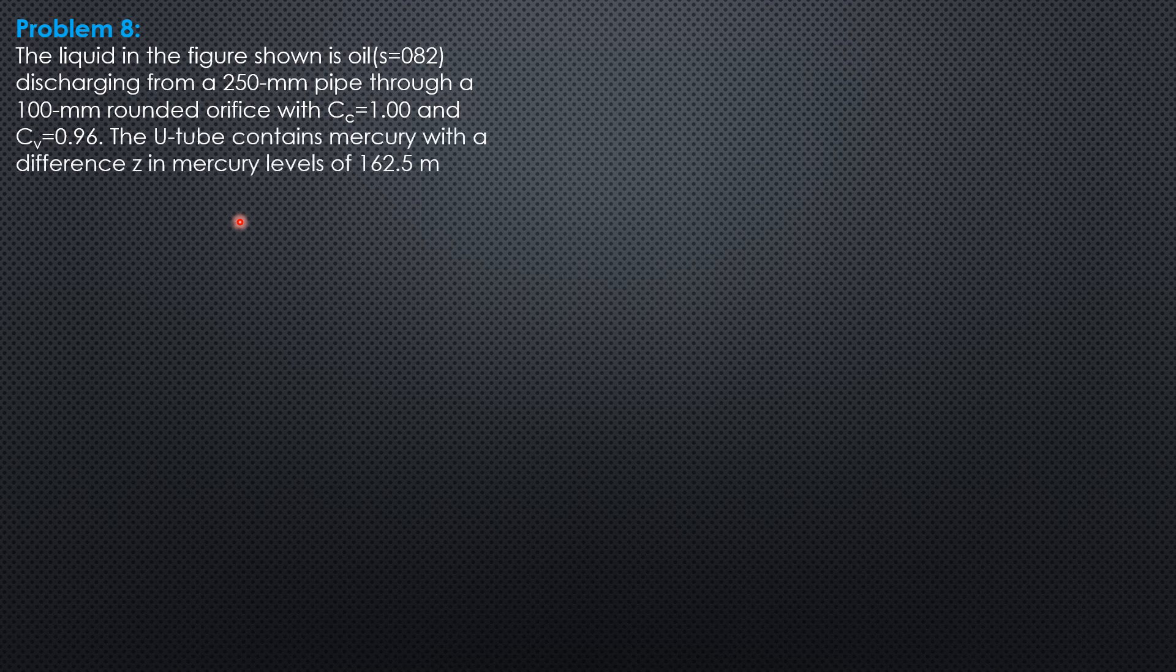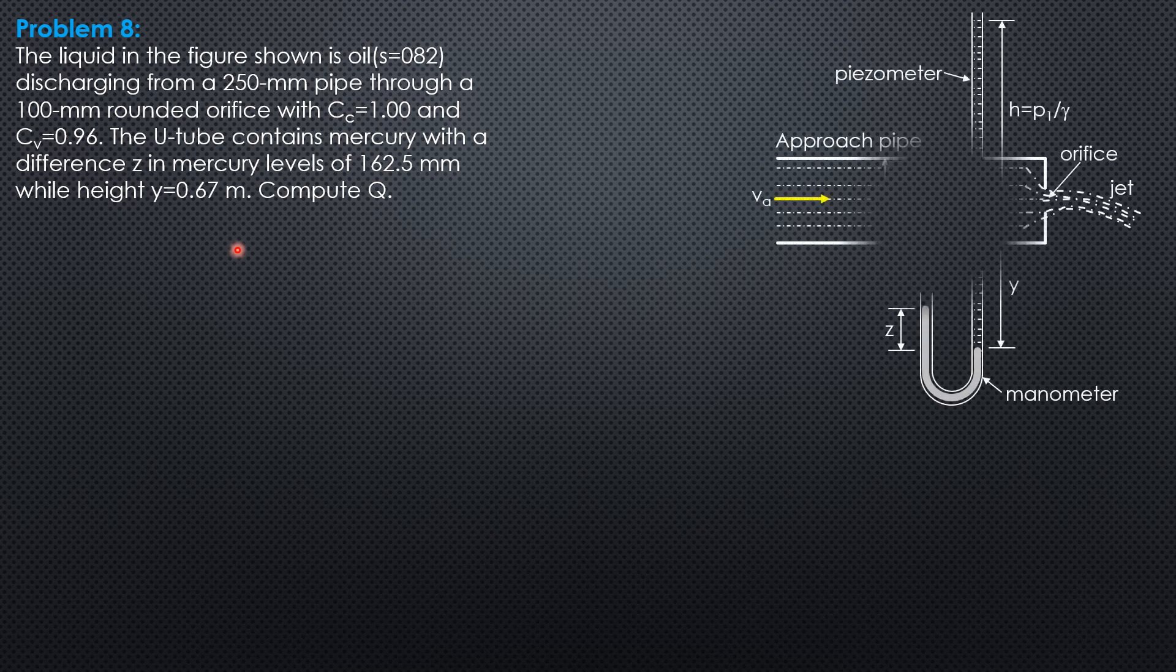The oil flows through a 100 mm rounded orifice with coefficient of contraction C_c = 1.00 and coefficient of velocity C_v = 0.96. The U-tube contains mercury with a difference z in mercury levels of 162.5 mm, while height y is 0.67 meters. Compute Q. This is the given figure.